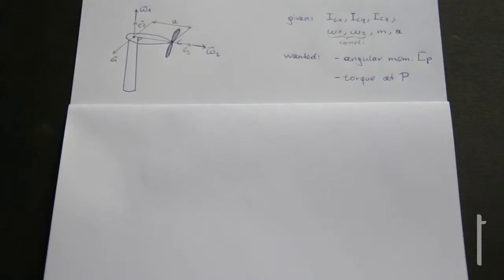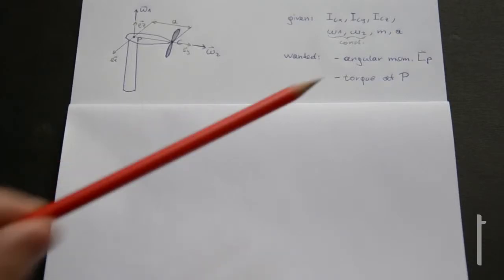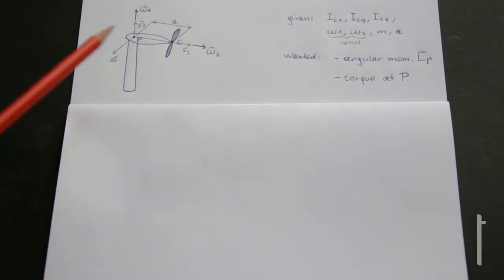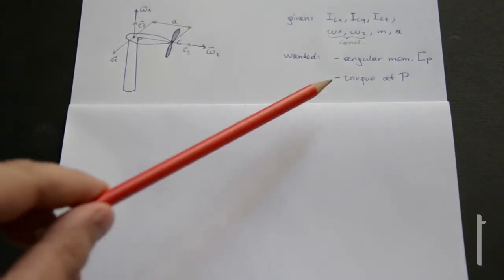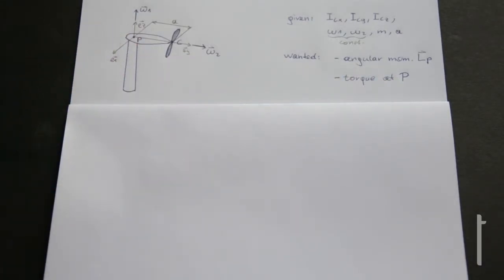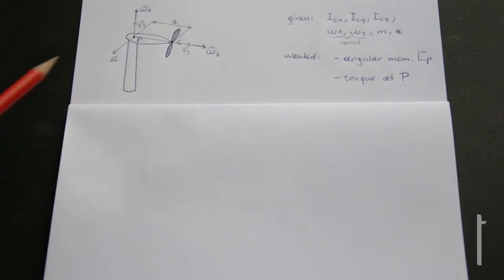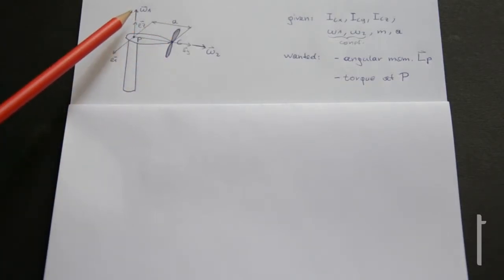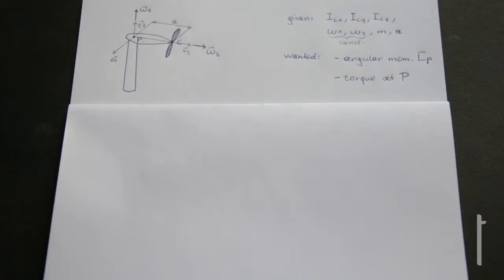We're looking for the angular momentum LP, the angular momentum vector concerning point P, which is the origin of coordinates. The second question asks for all torques at that point as well. First, we look at the coordinate system, which is fixed with the head of the wind turbine and rotates with angular velocity omega 1.